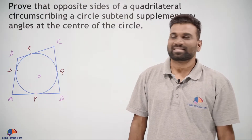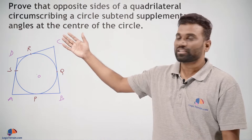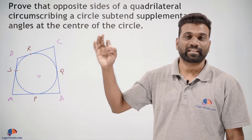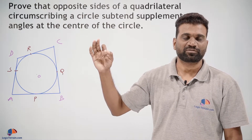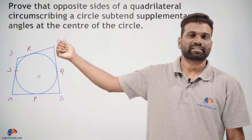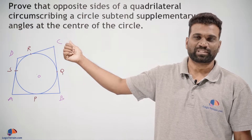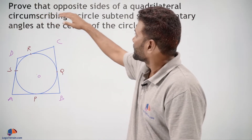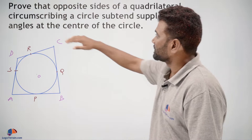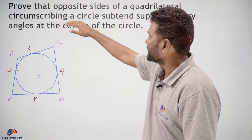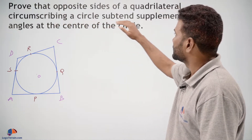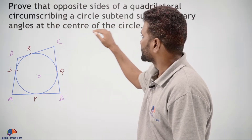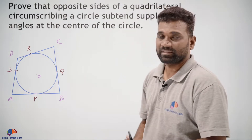Hello dear students, here is our question — very important, please follow carefully. This is one of the previous year's board questions. Prove that opposite sides of a quadrilateral circumscribing a circle subtend supplementary angles at the center of the circle.